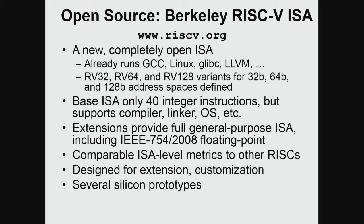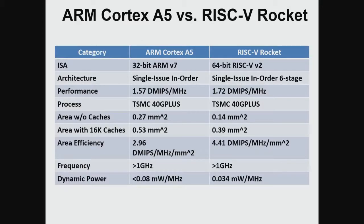It's not a toy processor — it's a generator of processors. One of those is called Rocket, which is somewhere in between an ARM Cortex-A5 and A53. ARM is the dominant processor core vendor. Rocket is a single-issue in-order pipeline that turns out to be a little more efficient than what you can get from ARM. The bottom line: this is not a wimpy processor — it's a real one.